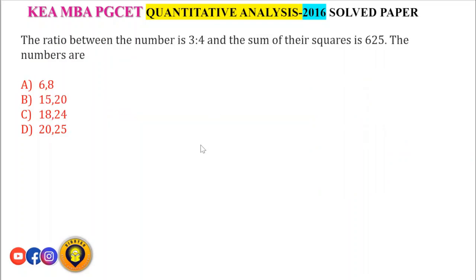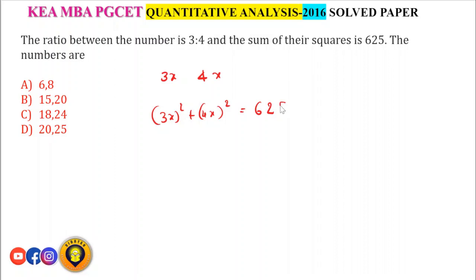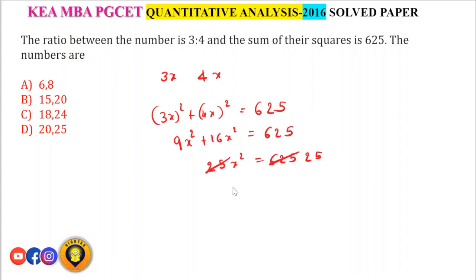The ratio between two numbers is 3:4 and the sum of their squares is 625. Let the numbers be 3x and 4x. Then (3x)² + (4x)² = 625. So 9x² + 16x² = 25x² = 625, giving x² = 25, x = 5. The numbers are 3×5 = 15 and 4×5 = 20.